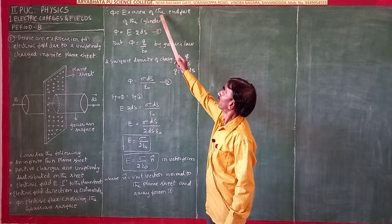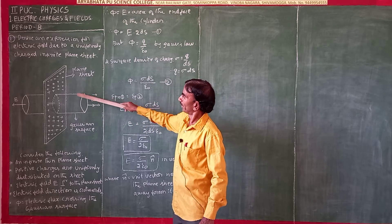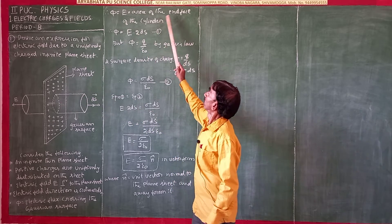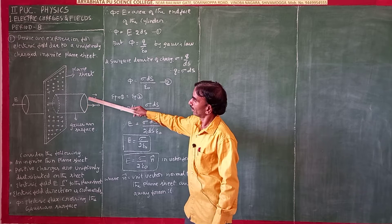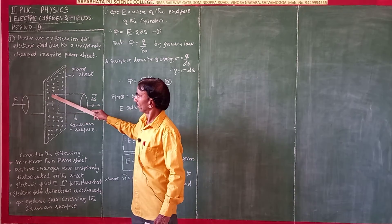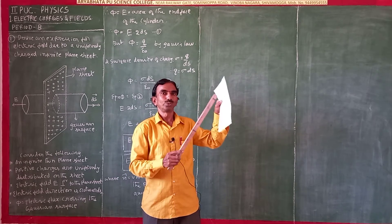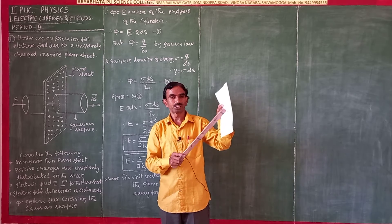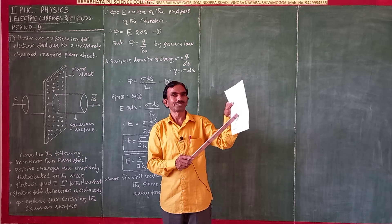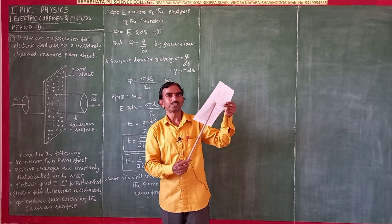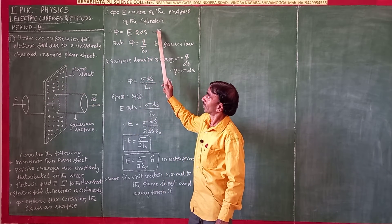Phi is equal to E times the area of the end sheet. So phi equals E times 2dS. Why 2dS? Because one dS is on this side and another dS is on the other side — totally 2dS. Here dS means a small surface area: 'd' means very small (differential) and 'S' means surface. So phi equals E times 2dS. This is equation 1.